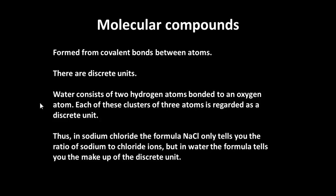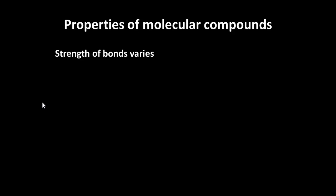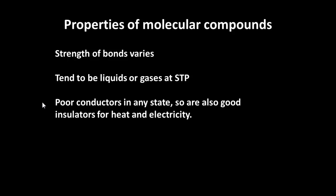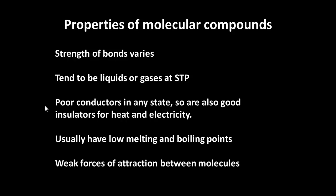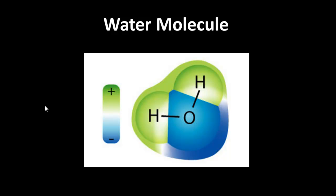That's different to sodium chloride, because there we're only concerned with the ratio of sodium ions to chloride ions. So there isn't a discrete sodium chloride unit there. And a discrete unit is referred to as a molecule. The strength of the bonds in molecular compounds varies. They do tend to be liquids or gases. They're usually poor conductors. That means they're going to be good insulators. And they usually have low melting and boiling points, and there is a weaker force of attraction between the molecules.